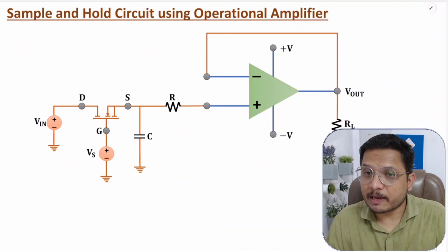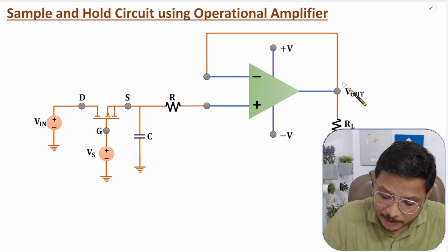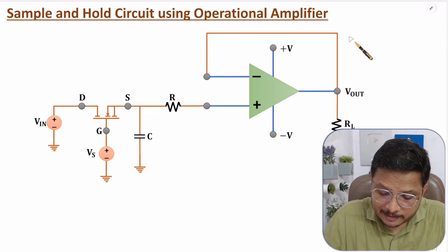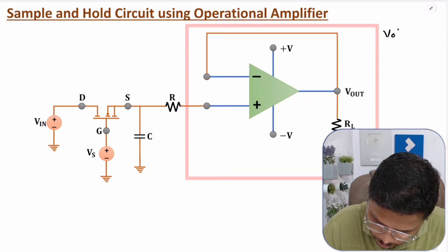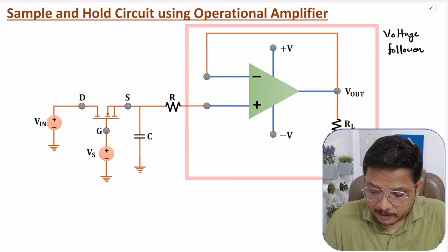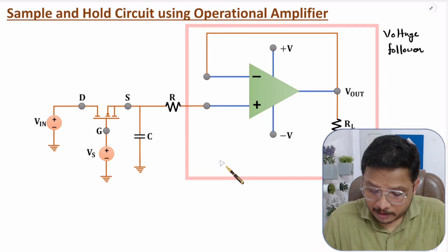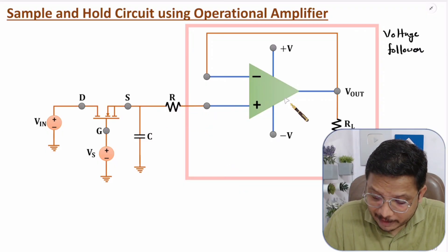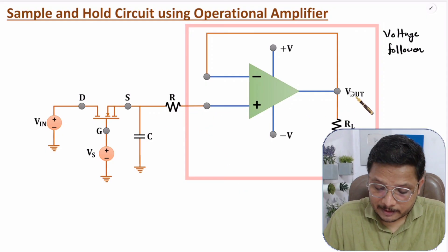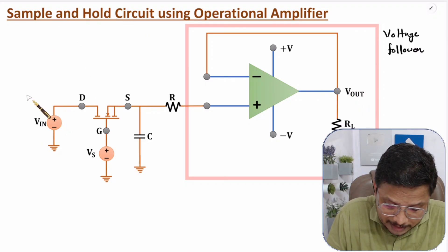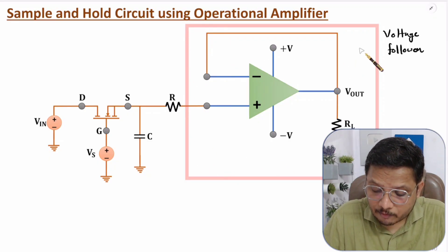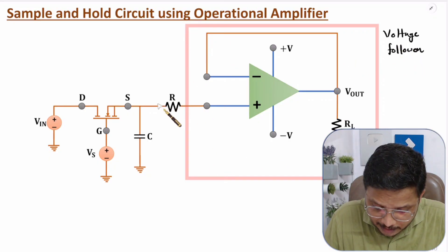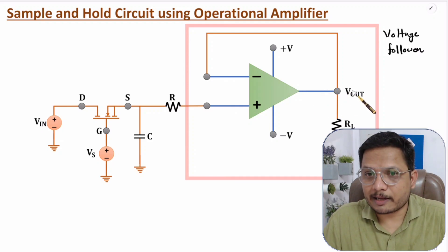Here we have the sample and hold circuit using an operational amplifier. If you observe this portion of the op-amp circuit, it is similar to a voltage follower circuit. In a voltage follower circuit, whatever input we give, that will appear at the output side. So to understand the sample and hold circuit, we need to understand this portion — where the input is the same as the output.